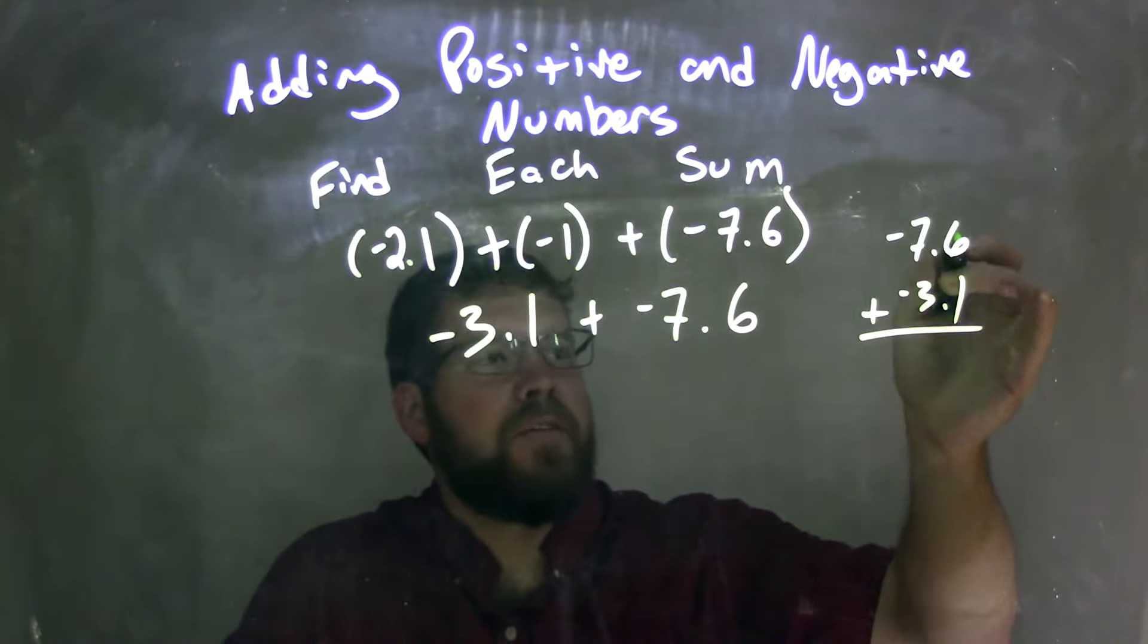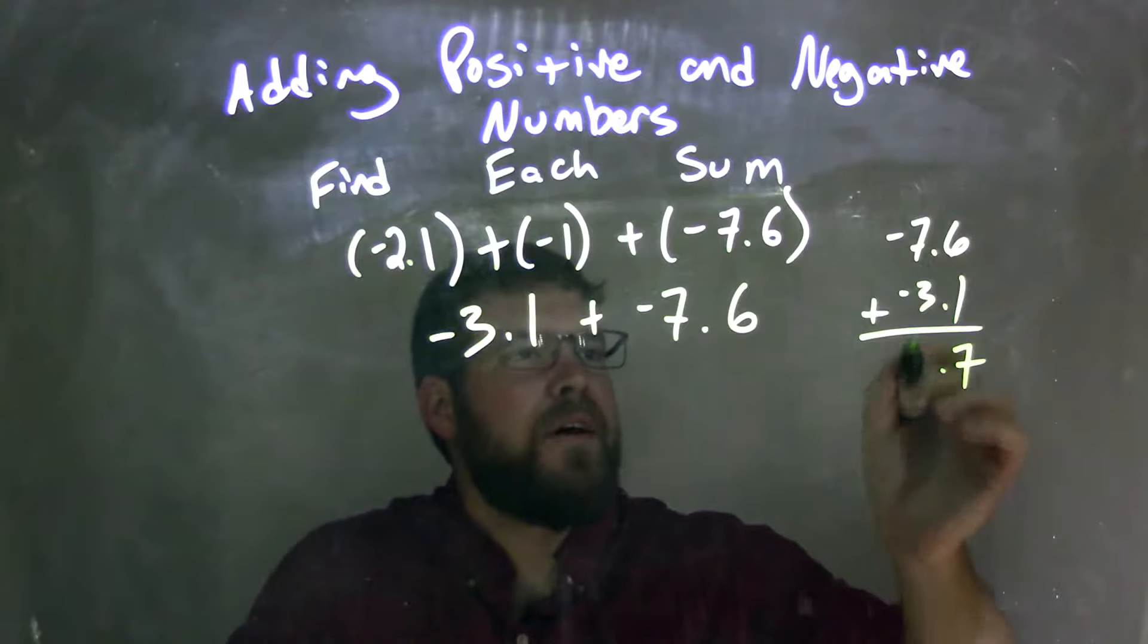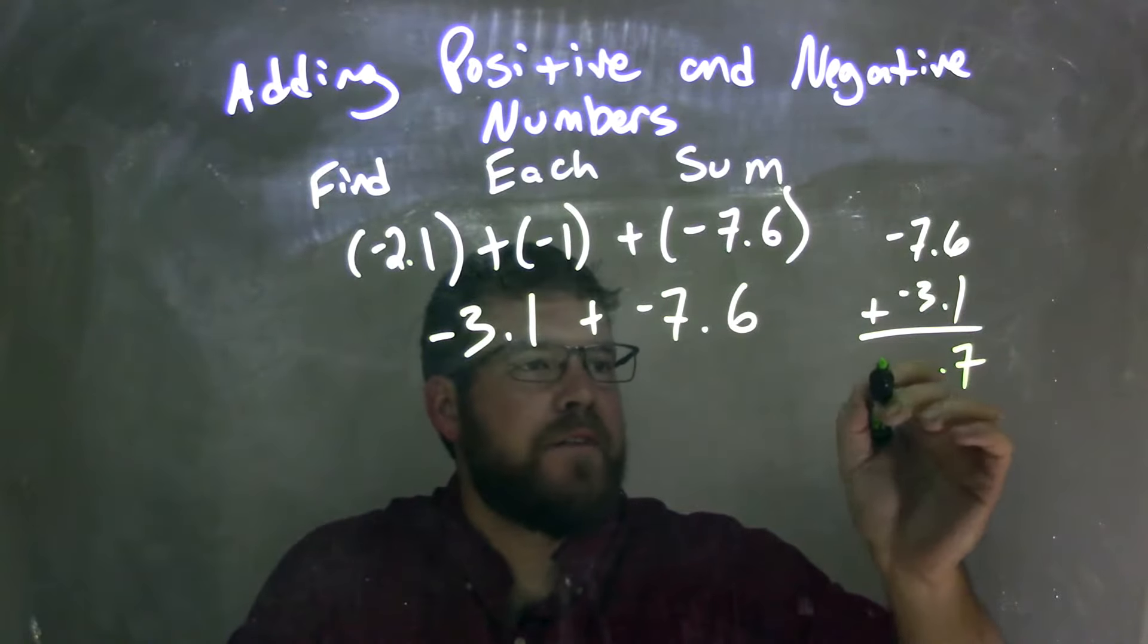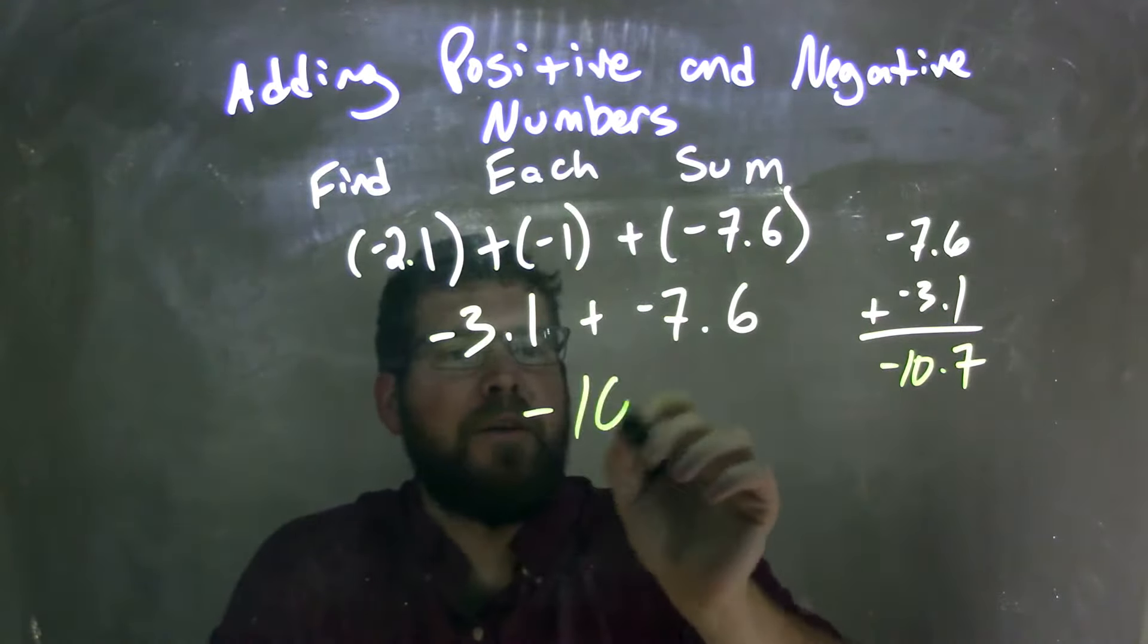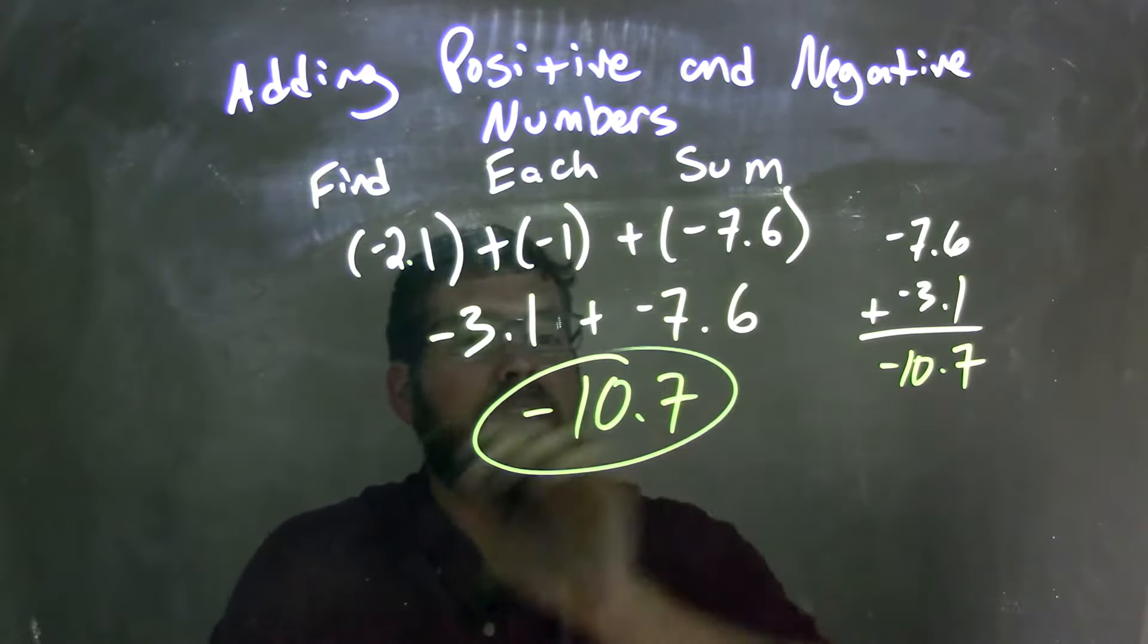So 0.6 plus 0.1 is 0.7, and negative 7 plus negative 3 is negative 10. And negative 10.7 is my final answer.